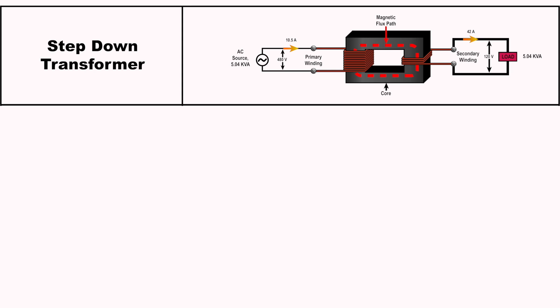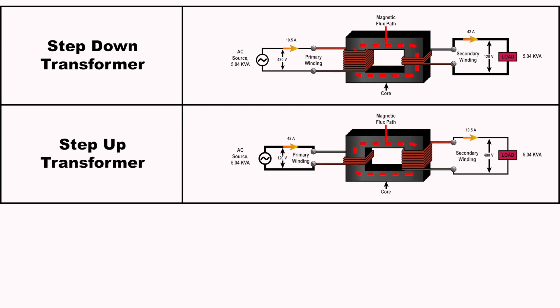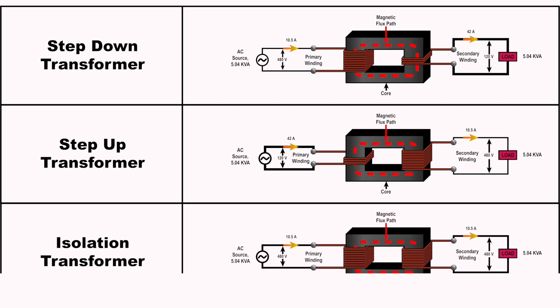If the primary has fewer turns than the secondary, you have a step-up transformer. This type of transformer increases or steps up the voltage. If the primary has the same turns as the secondary, the primary incoming voltage will be the same as the outgoing secondary voltage.